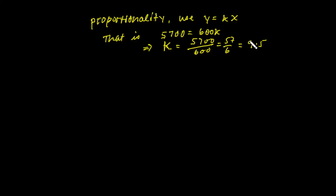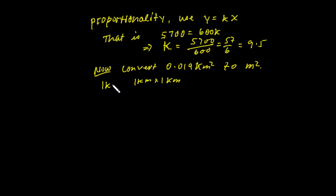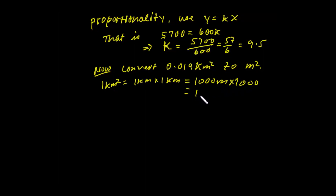Now we have calculated k. Next, convert 0.019 square kilometers to square meters. Since 1 kilometer equals 1,000 meters, 1 square kilometer equals 1,000 times 1,000, which is 1,000,000 square meters.